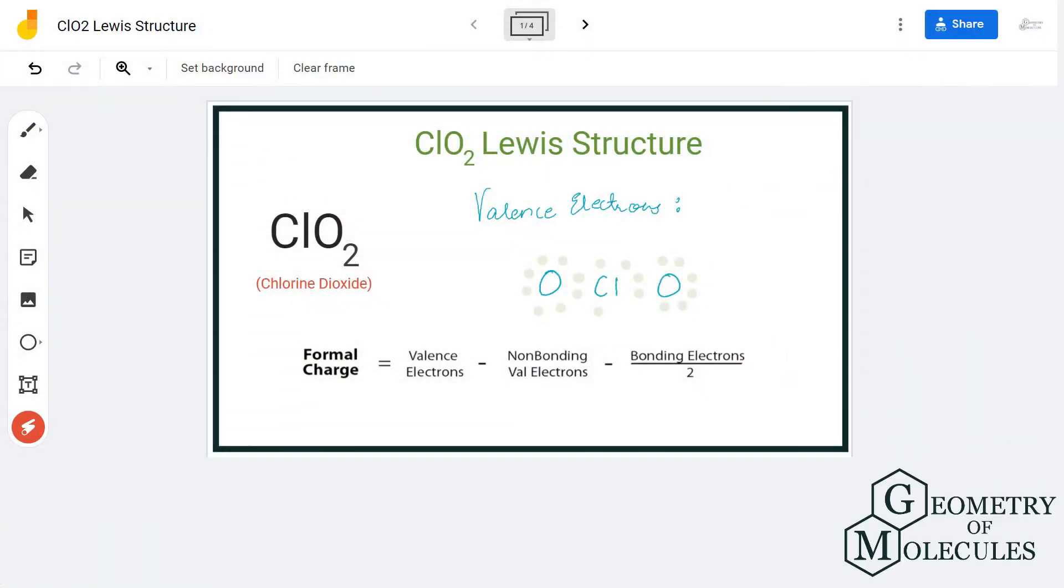Hi guys, today in this video we are going to look at the structure of ClO2, which is the chemical formula for chlorine dioxide. To understand its Lewis structure, we will first find out the total number of valence electrons.